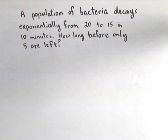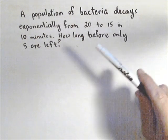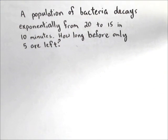In this problem, we're gonna talk about a population decaying exponentially and figure out how long it takes to get to a certain level. This applies to a lot of different scenarios where exponential decay or growth is involved. So let's say our bacteria decays from 20 to 15 in only 10 minutes, and we want to figure out how long before only five are left.